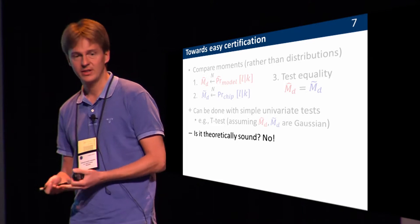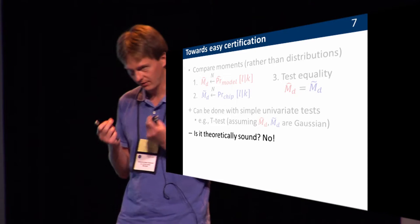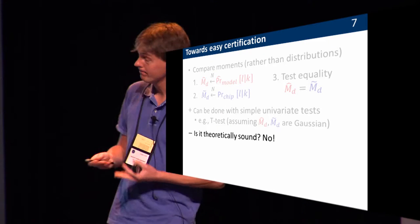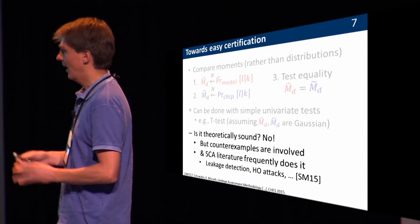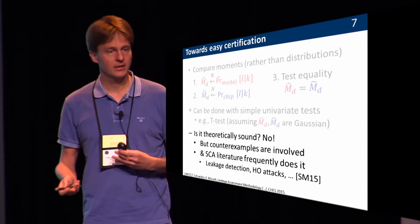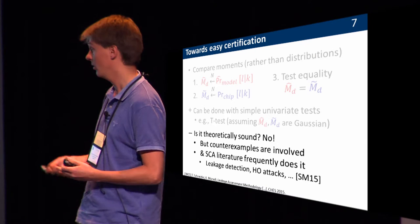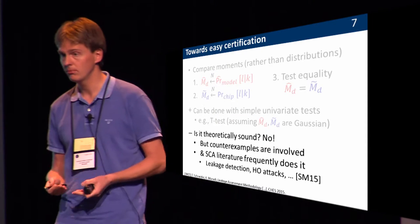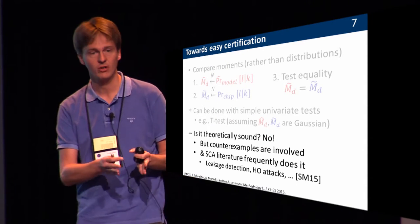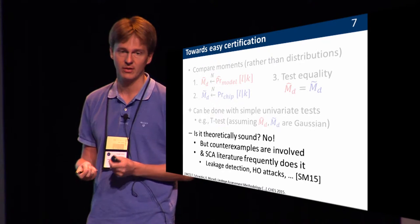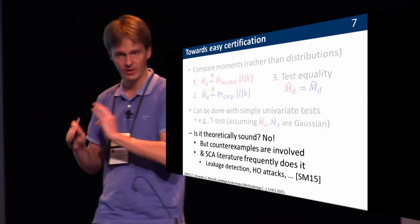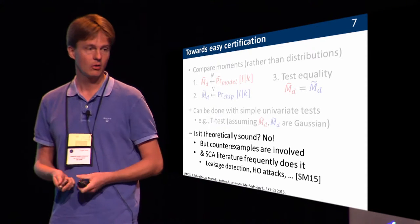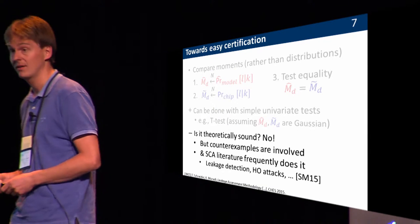The big minus is: is this theoretically sound? No, because it is possible to find two distributions that are different but have exactly the same moments. Is this a problem? Counterexamples we are aware of look quite involved, and I'm not sure they exist in practical cases. Also, if you look at what we do concretely — leakage detection, higher order attacks — that is just based on estimation of moments. Maybe the approaches we currently use for evaluations are not completely sound, and we should question ourselves, but at least this gives some incentive to look at that.